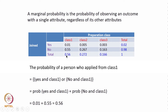The probability of a person coming from class 1 is 0.56 — that is, of all the people who applied. It equals P(joined and class 1) plus P(did not join and class 1), which is 0.01 plus 0.55, equaling 0.56.